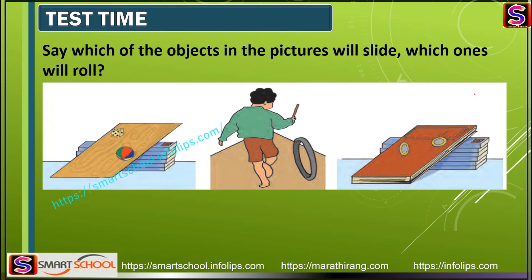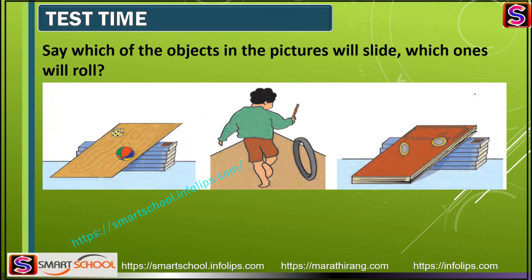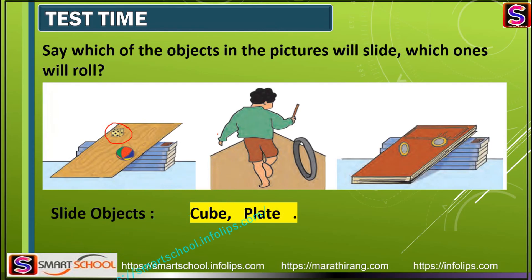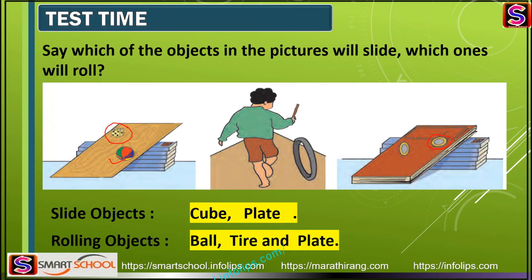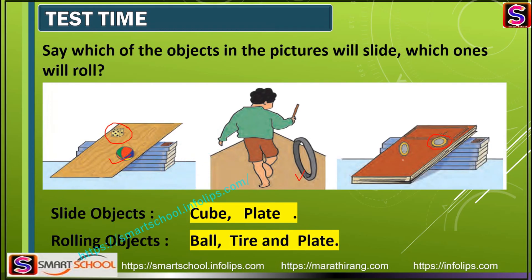One more test: which objects will slide and which will roll? Objects with a flat surface touching another surface will slide. Objects with a curved surface touching another surface will roll. The pot and the cube (dice) will slide. The ball will roll because it has a curved surface. The tire will roll because its curved surface touches the ground. The coin or plate can both slide and roll depending on its orientation.